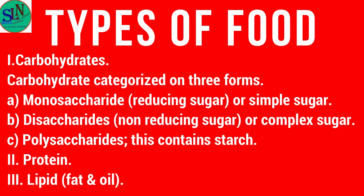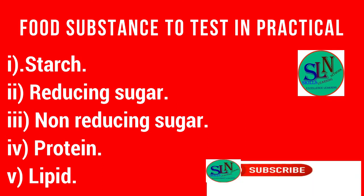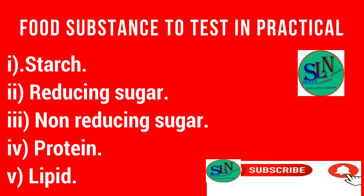When we go to test, carbohydrates are divided into three categories: reducing sugar, non-reducing sugar, and starch. We also add protein and lipid, which are independent types. So the types of food tests in our nutrition and food test practicals will be: starch, reducing sugar, non-reducing sugar, protein, and lipid.